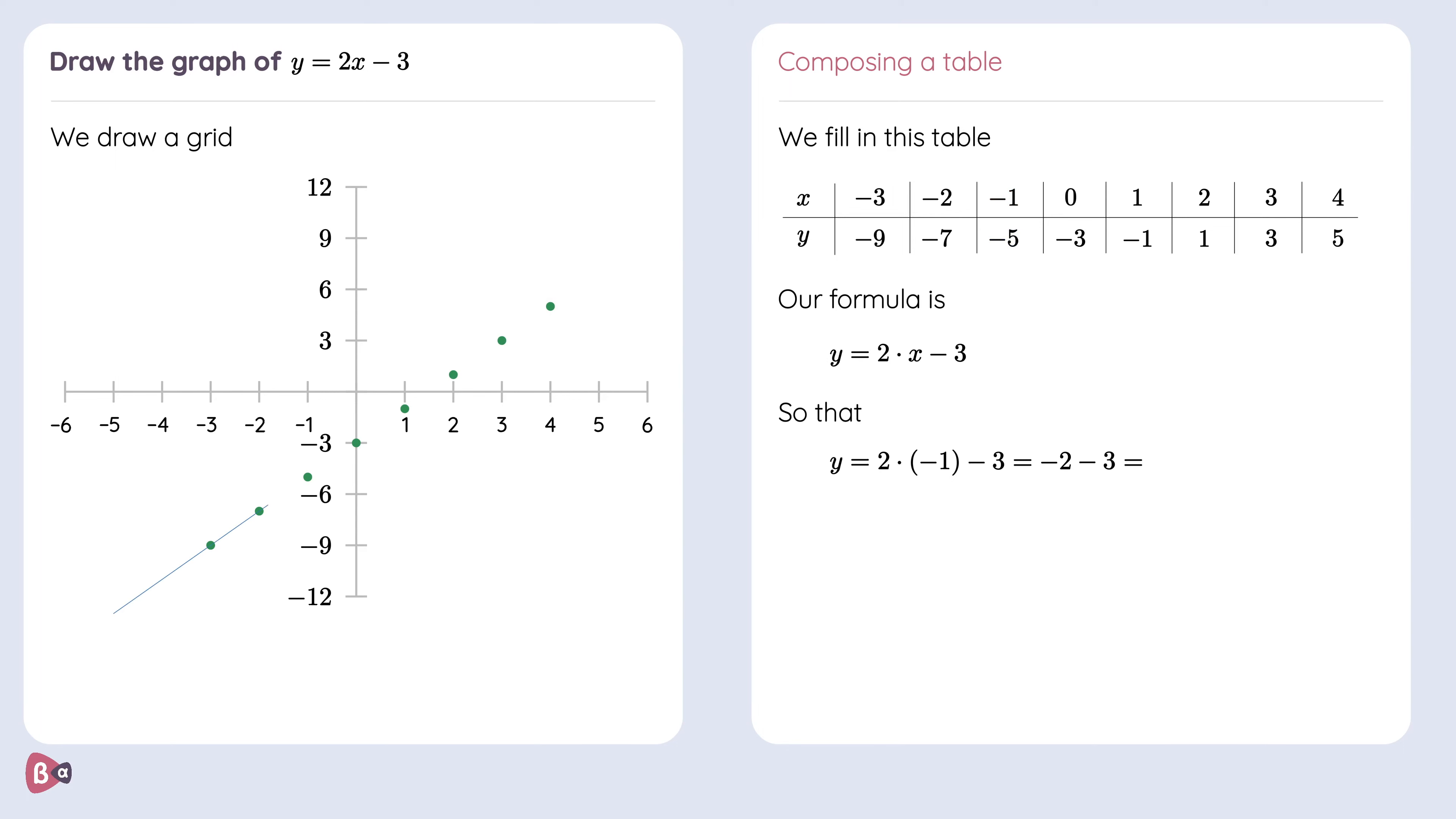Now looking at these points we see that if we connect them we would get a line. Let's remove the points and this is our final answer. We have drawn the graph of the function y is equal to 2x minus 3.